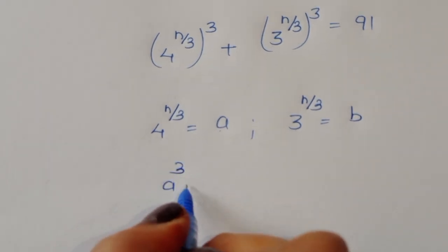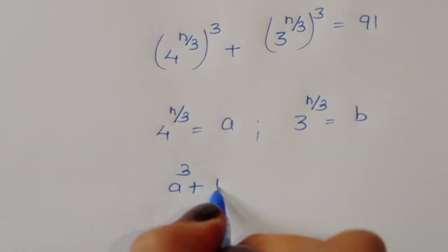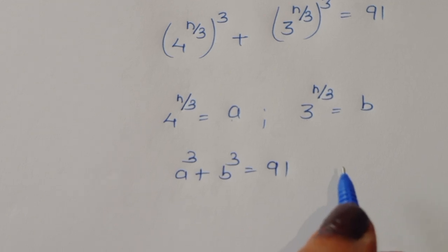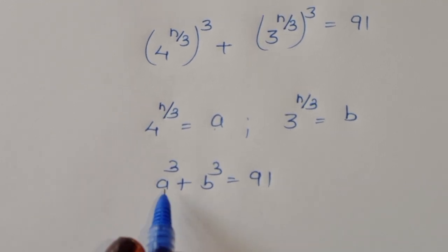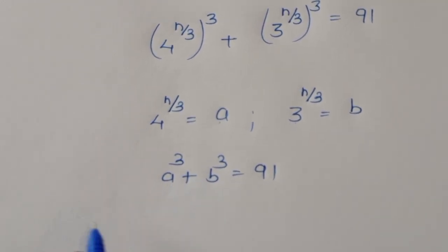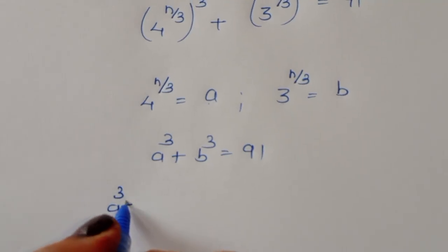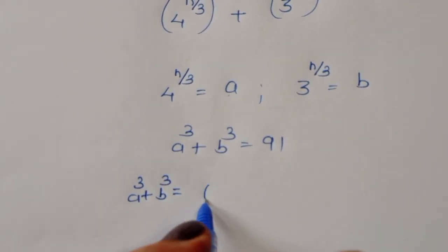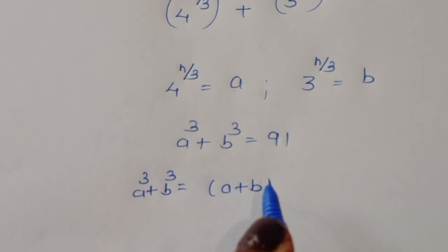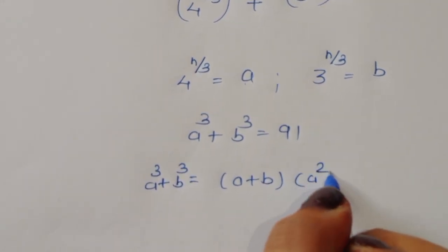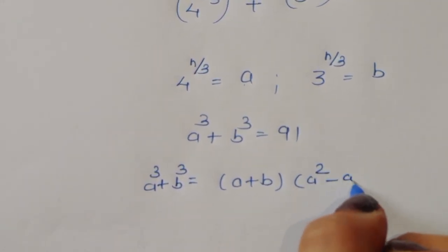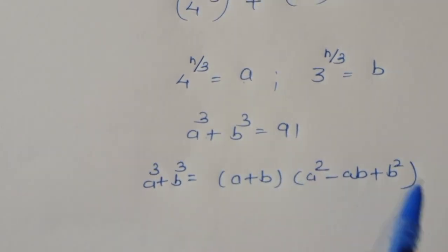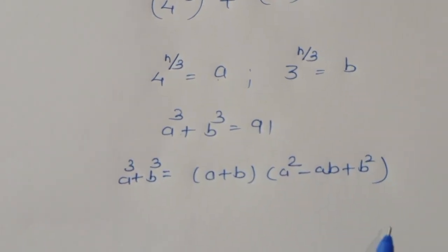It becomes a³ + b³ = 91. We know the formula: a³ + b³ = (a + b)(a² − ab + b²).